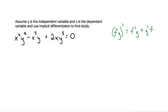Using that rule, we'll take the derivative of these two terms. The derivative of X to the fourth would be 4X cubed, but because X is the dependent variable, we need to multiply that by dx/dy.